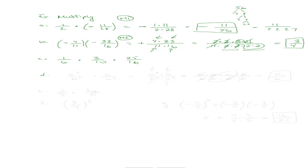We can also include variables. Let's say we have a cubed over b squared times b over a squared. Multiplying straight across gives a cubed times b over b squared times a squared. Expanding the exponents: a cubed is a times a times a, b squared is b times b, and a squared is a times a. Canceling two a's and one b leaves us with a over b as the final answer.